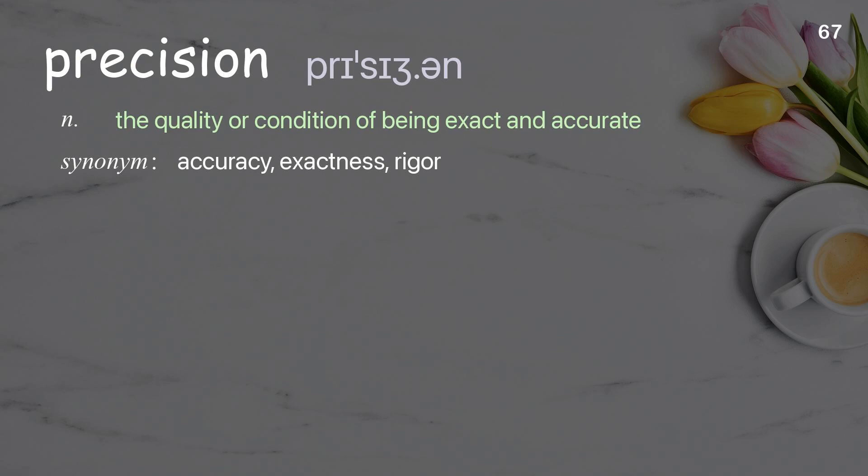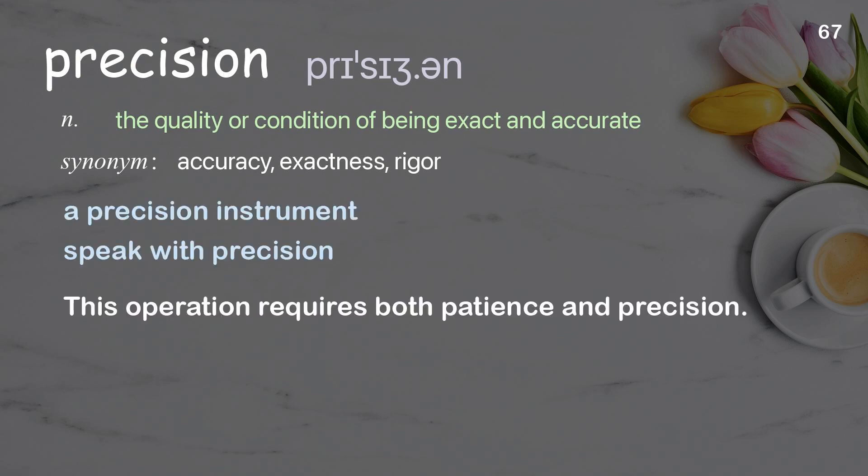Precision: the quality or condition of being exact and accurate. Examples: a precision instrument, speak with precision. This operation requires both patience and precision.